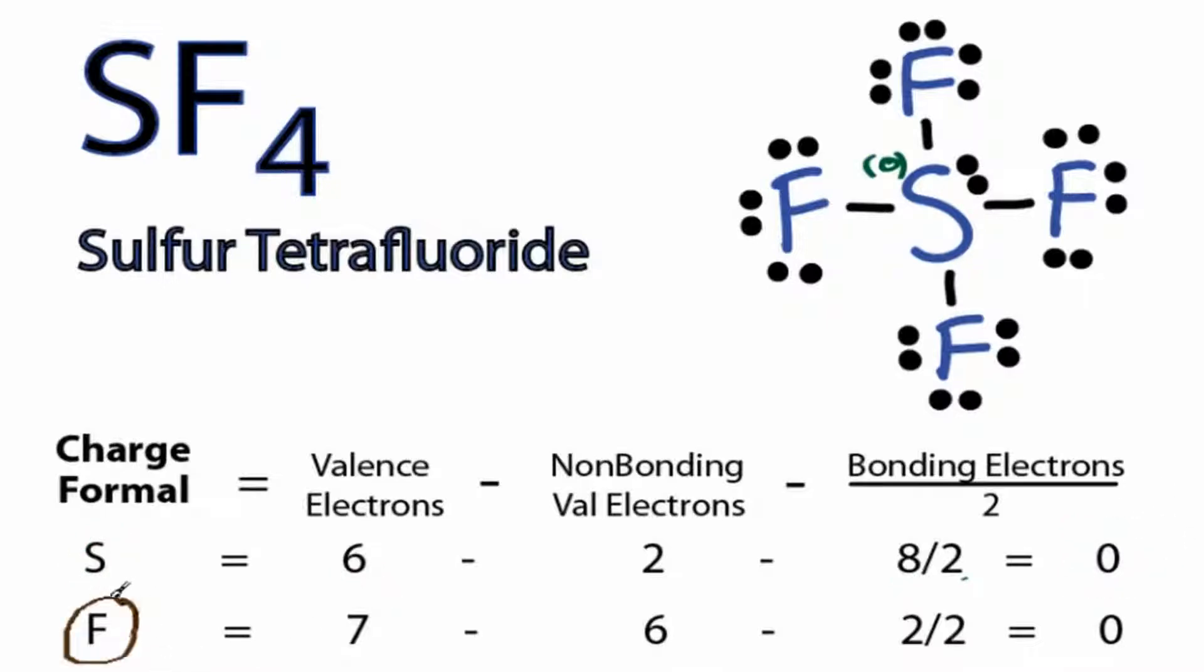For fluorine on the periodic table, it has 7 valence electrons. It has 6 non-bonding and then 2 in the bond right here, which we'll divide by 2. 7 minus 6 minus 1 is also 0. And all these fluorines are symmetrical, so we only have to do 1. Since the formal charges are 0, this is the best structure for SF4.